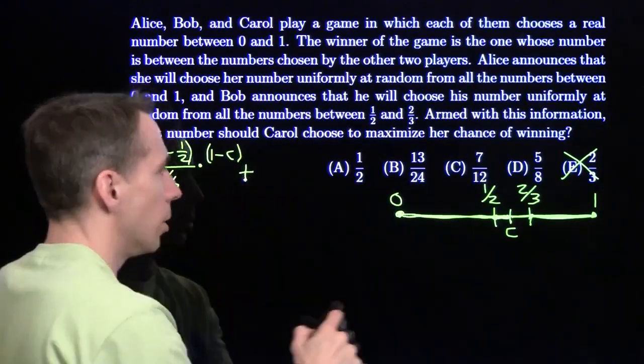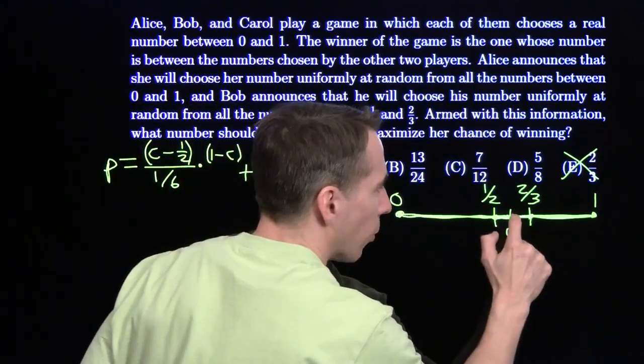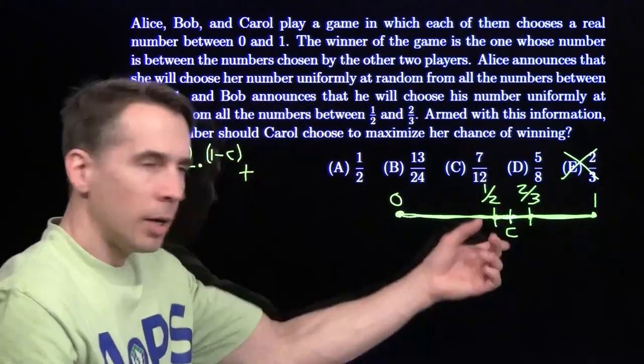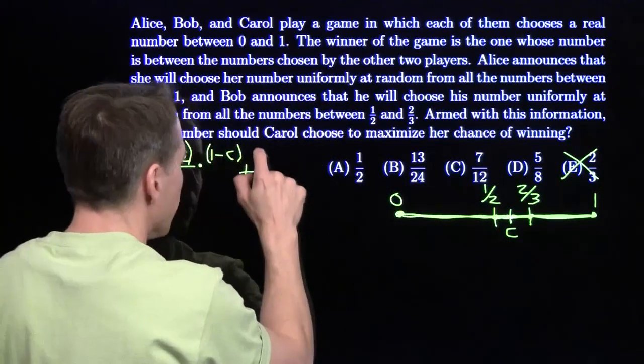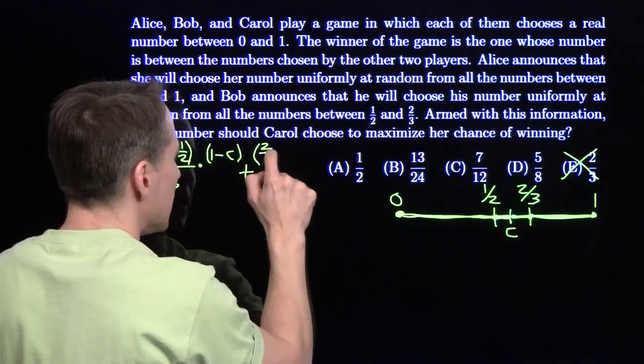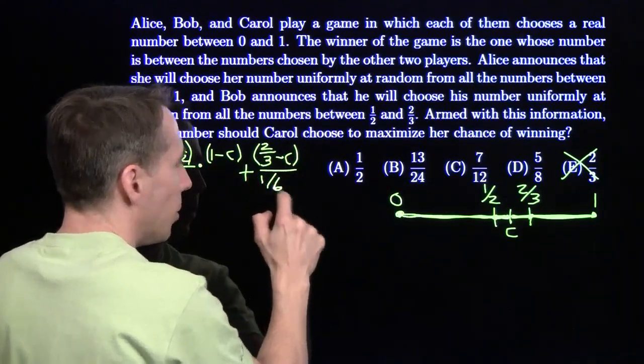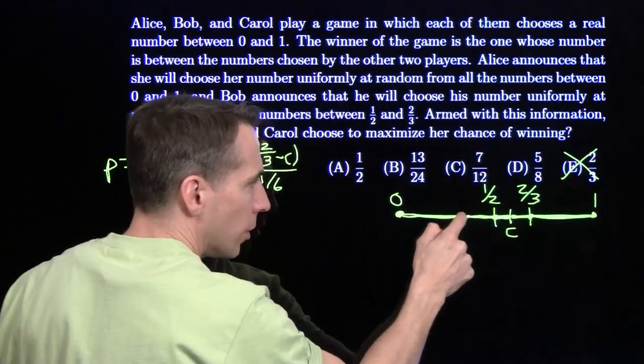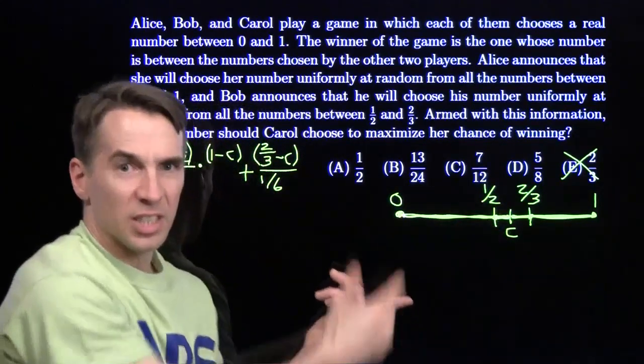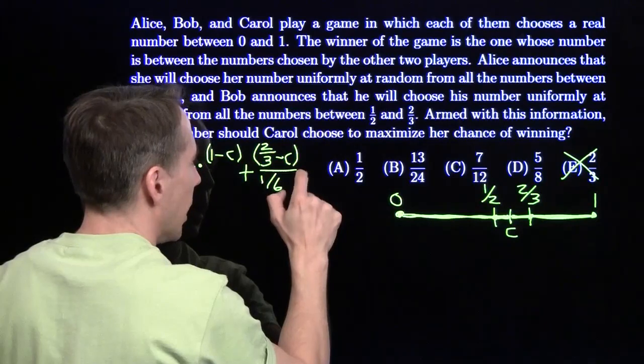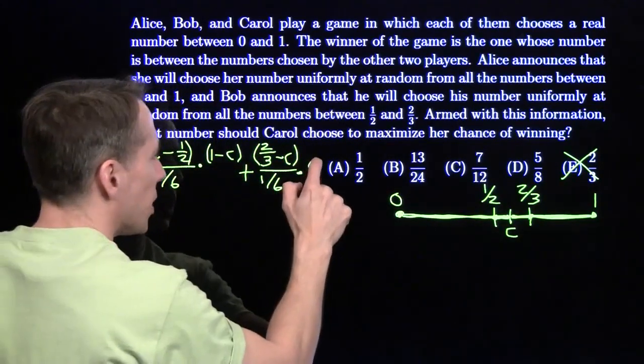Then we have the other term, when Bob ends up on the right and Alice on the left. Bob has an interval on the right of (2/3 - C) out of the whole 1/6 to choose from, and then Alice on the left has an interval of length C to land in out of the whole interval of length 1. So there's my expression.